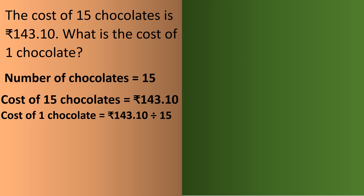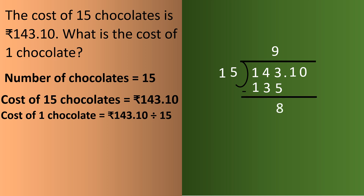We write 143.10 with divisor 15. We check the table of 15 in 1 — not possible; in 14 — not possible since 14 is less than 15. So we check the table of 15 in 143: 15 nines are 135. We subtract and get 8. We place the decimal point and bring down 1.